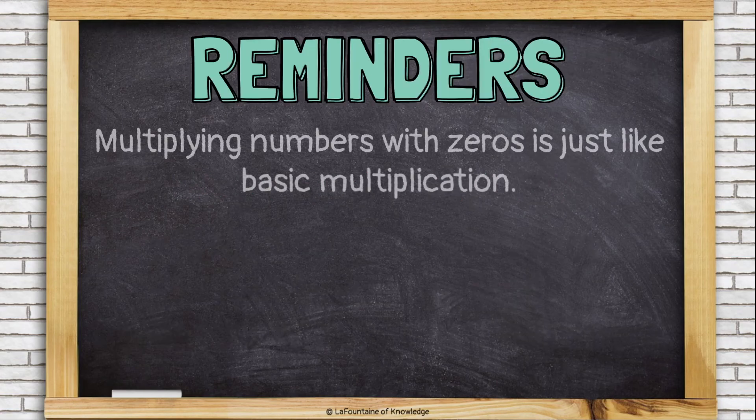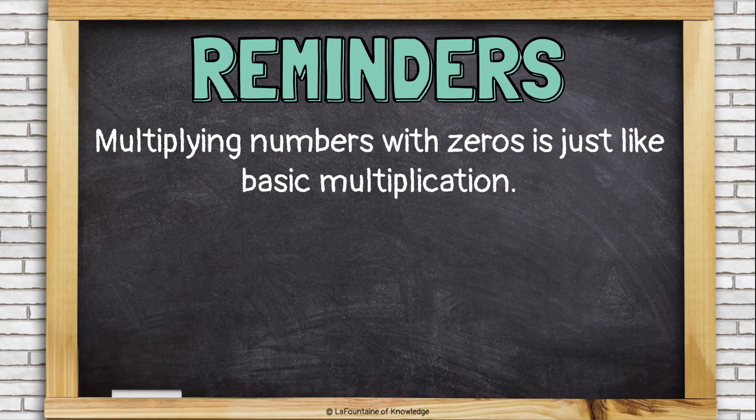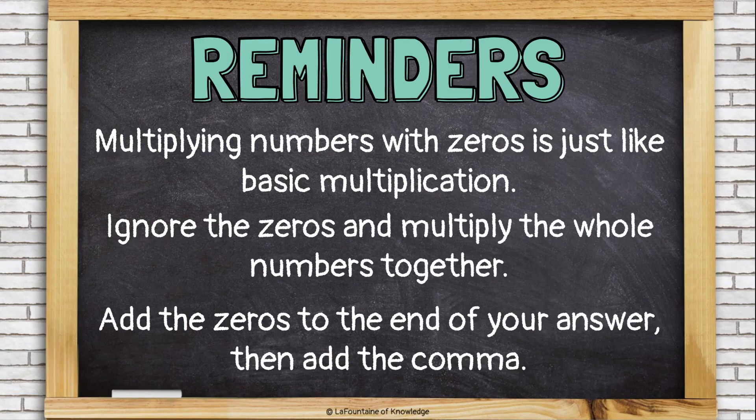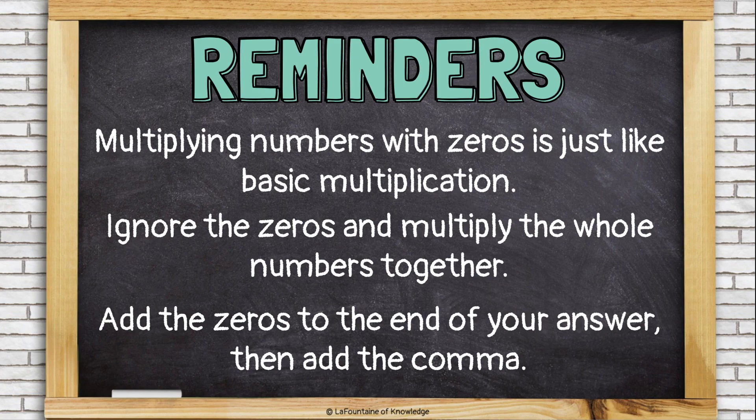Let's review. Multiplying numbers with zeros is just like basic multiplication. Ignore the zeros and multiply the whole numbers together. Then add the zeros to the end of your answer, and then add the comma last.